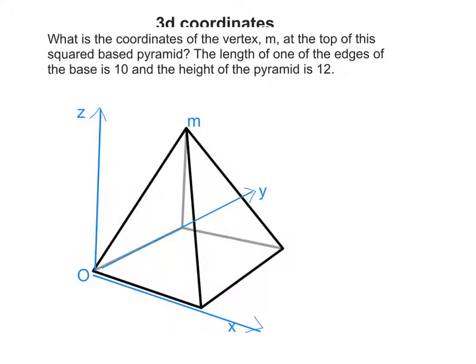Let's put some of this information on. So I know this is 10, and I know all sides are 10 because it's square-based. And I know the distance up to the top is 12. So I'm pretty confident that the coordinates of M will be something, something, 12, because that's the height of my pyramid.